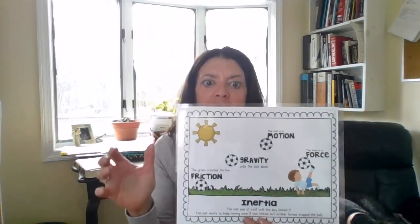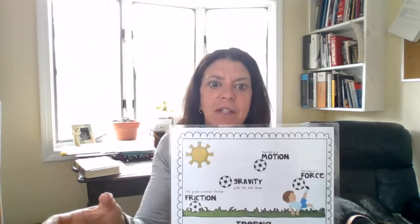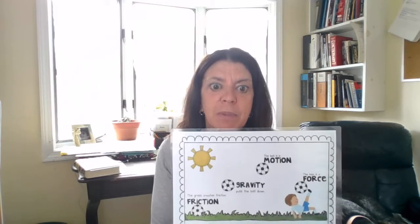This word down here — inertia — we're not going to talk too much about that, but the ball was at rest until the boy kicked it. The ball wants to keep moving once it was kicked, but outside forces stop it. So the boy kicks the ball, applies the energy or force, the ball goes into motion, it's being pushed away from him, gravity pulls it down to the ground, and then depending on what surface it hits, that friction or lack of friction is going to determine when the ball will stop moving.